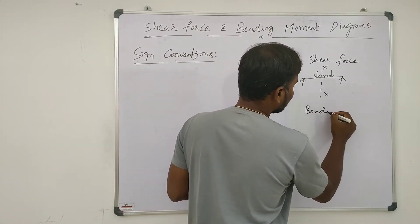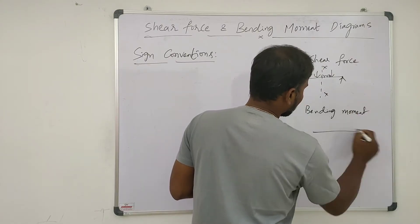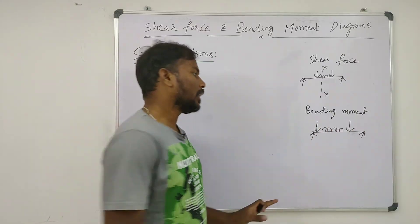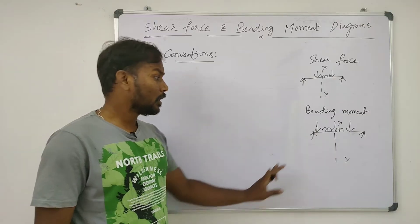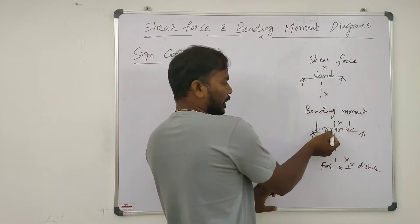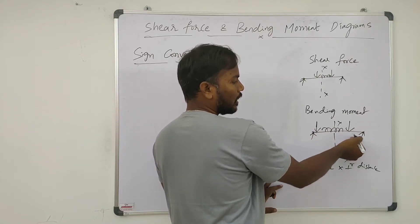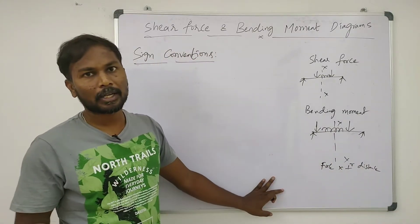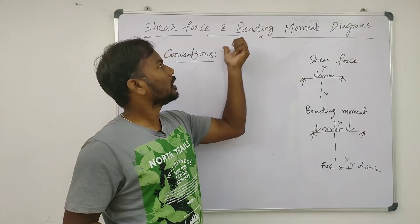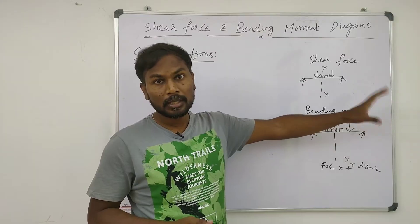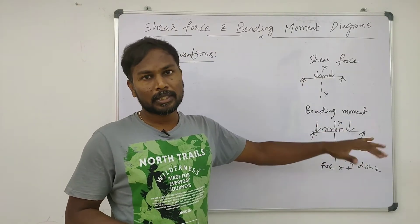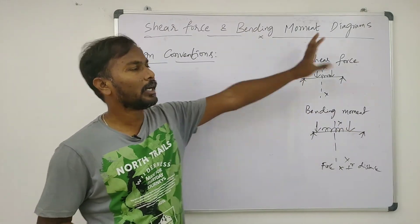The variation of shear forces acting on the beam shown in a diagram is called the shear force diagram. Likewise, the variation of moments regarding bending shown in a diagram is called the bending moment diagram.